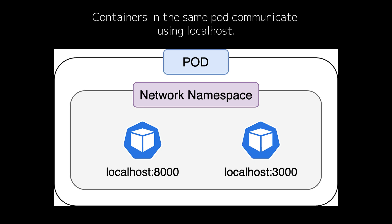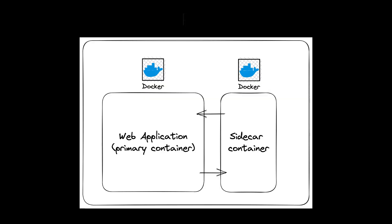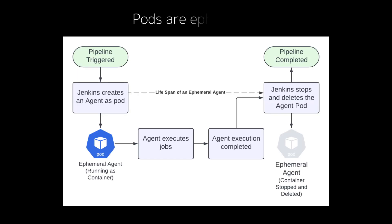This allows containers to work together as part of a single application. For example, you might have an app container and a sidecar container that logs application data or handles monitoring. However, pods are ephemeral — they don't live forever. If a pod fails, Kubernetes can replace it automatically, but pods are often used to host services or jobs that need to be resilient and scalable.